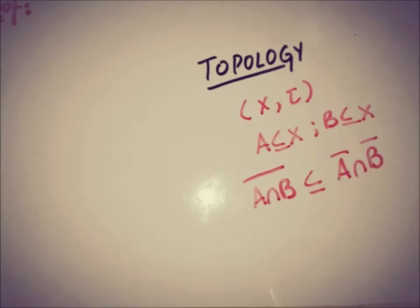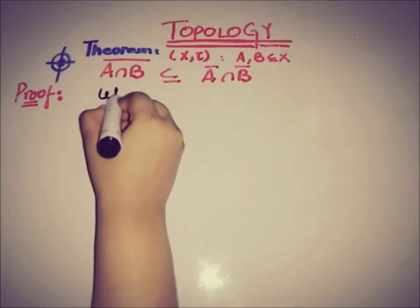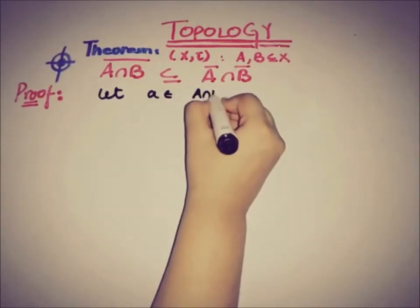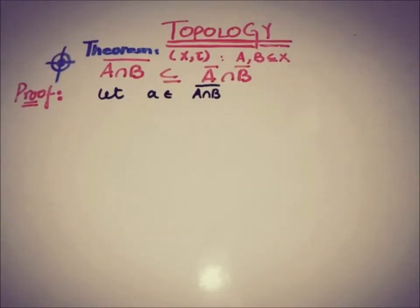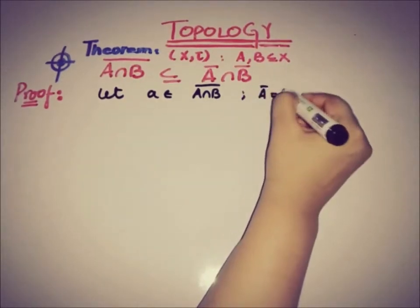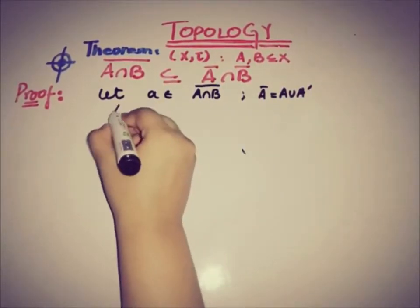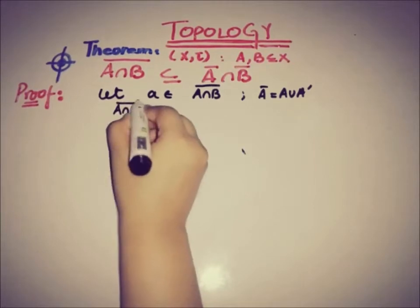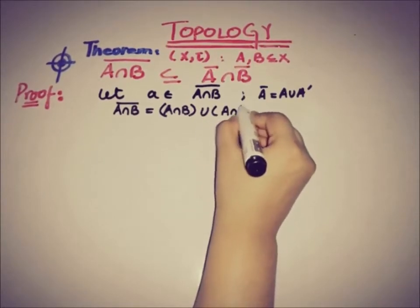Now let's see how to prove it. Our target is to prove that A intersection B, whole bar, is a subset of A-bar intersection B-bar. We are well familiar with the definition of the closed set and the relation of the closure and the accumulation point: A-closure is equal to A union A-prime. We can also write this relation for A intersection B — that is, A intersection B bar is equal to A intersection B, union A intersection B prime.